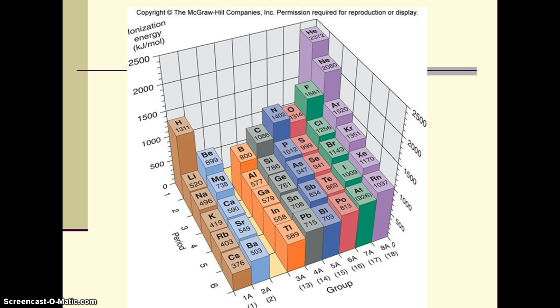If we look at it three-dimensionally and graphically in energy per mole, or kilojoules per mole of atoms, we can see the noble gases, it's very difficult to remove their electrons. And then fluorine and chlorine and oxygen are also very good at holding onto their electrons.